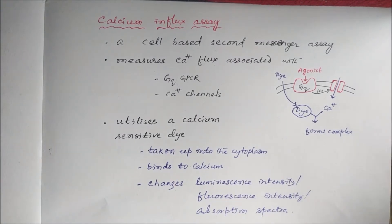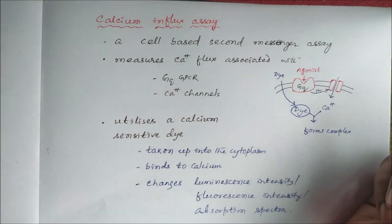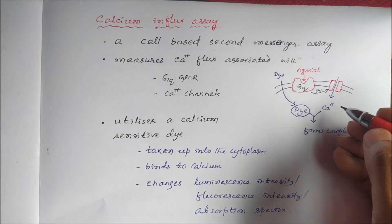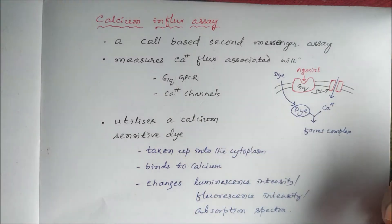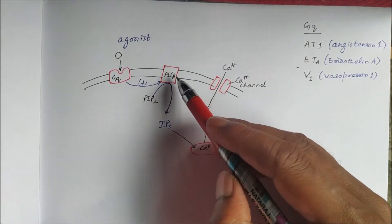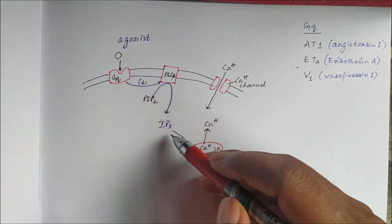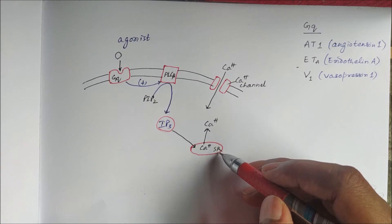The calcium influx assay is a cell-based second messenger assay where we measure the calcium flux associated with G protein-coupled receptors or calcium channels — usually the Gq type G protein-coupled receptors, which are linked to phospholipase C. Phospholipase C converts phosphatidylinositol diphosphate to inositol triphosphate (IP3).